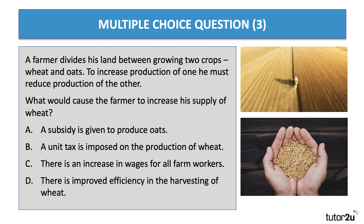Question three: a farmer divides his land between growing two crops — wheat and oats. To increase production of one, he must reduce production of the other. We call this competitive supply. What would cause the farmer to increase his supply of wheat? Press the pause button and have a go.